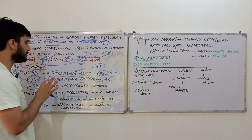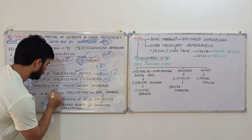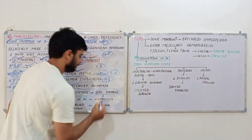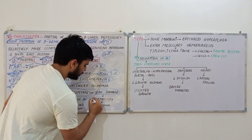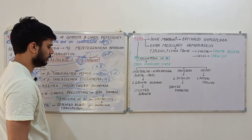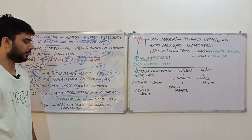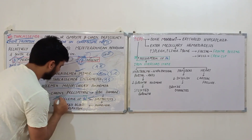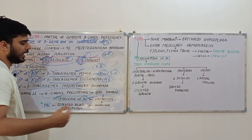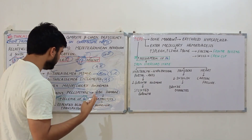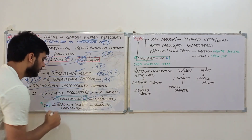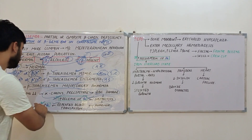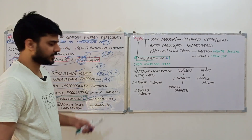In beta thalassemia major, there is complete absence of beta chains, so alpha chains precipitate within the RBC because they cannot find beta chains to form hemoglobin. This damages and destroys the RBCs, causing hemolysis. RBCs contain hemoglobin which contains iron in ferrous form, so hemolysis releases iron and leads to anemia. Repeated blood transfusions required to treat the anemia also contribute additional iron.